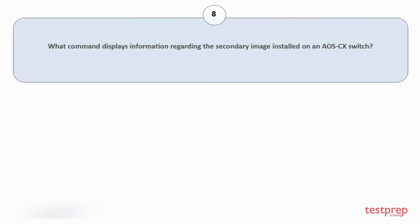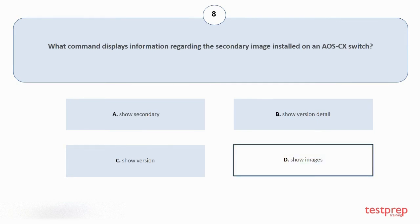Question number 8, What command displays information regarding the secondary image installed on an AOS-CX switch? Your options are: Show secondary, Show version detail, Show version, Show images. The correct answer is option d.